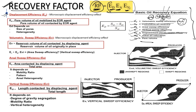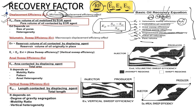Displacement efficiency is also termed microscopic efficiency. Ed is the ratio of pore volume of oil mobilized by the EOR agent divided by the pore volume of oil contacted by the EOR agent. The formula is Ed = (Soi - Sor) / Soi, where Soi is initial oil saturation and Sor is residual oil saturation. Ed depends on size of forces and heterogeneity.